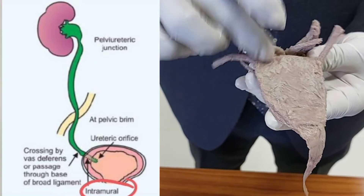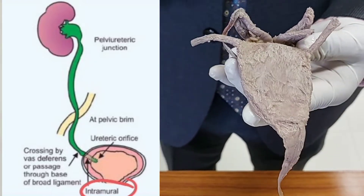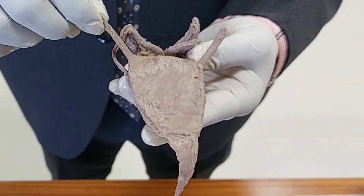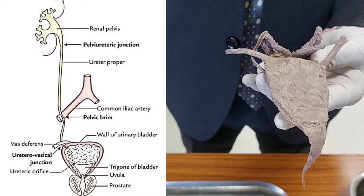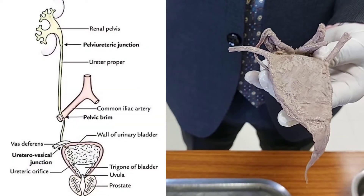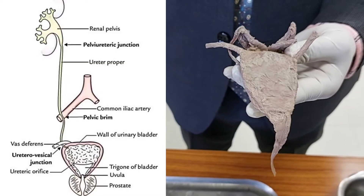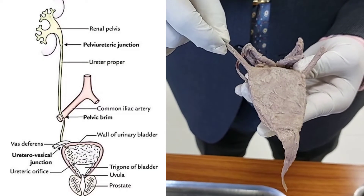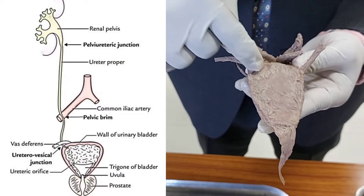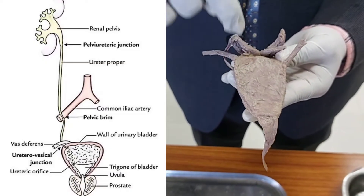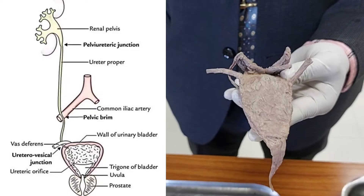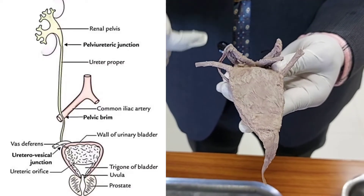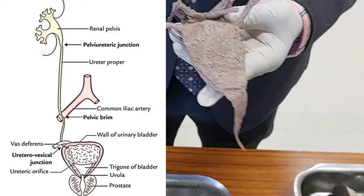The ureter opens inside the urinary bladder passing through the muscular wall. This intramural or intravesical part of the ureter is about 1.5 to 2 centimeters and is the most constricted part. There are three constrictions of the ureter: first at the pelviureteric junction where the renal pelvis ends and the ureter starts; second where the ureter crosses the pelvic brim; and third is the intravesical part, which is the most constricted. A kidney stone may lodge at this most constricted part.